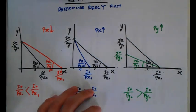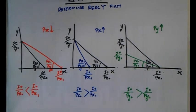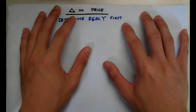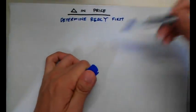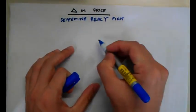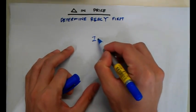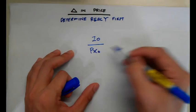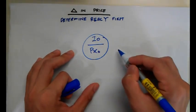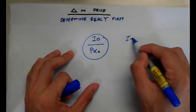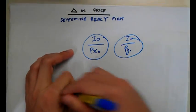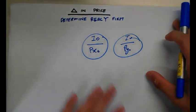So what happens when there is a change in price? Before we do any analysis, we have to determine the real income first. Just a quick revision: real income is your monetary income divided by the price of a certain good. This gives your real income in terms of X, and this gives your real income in terms of Y.